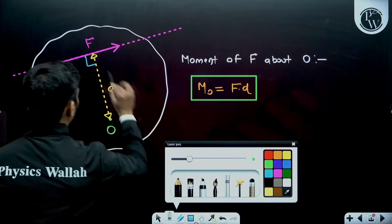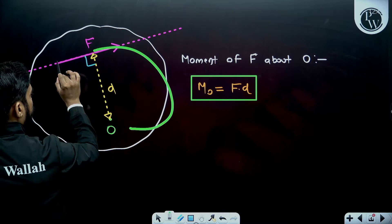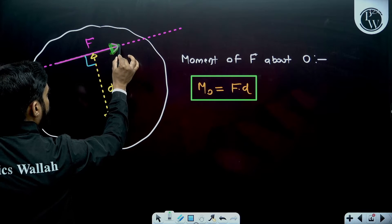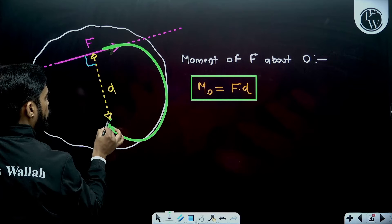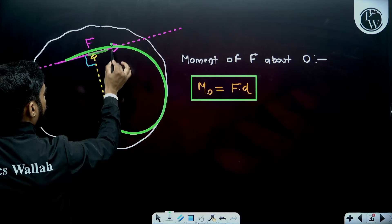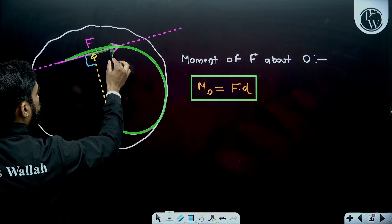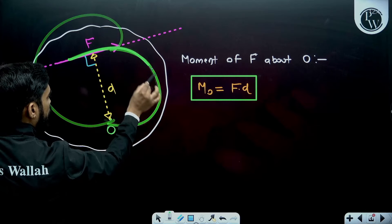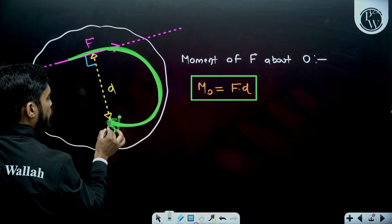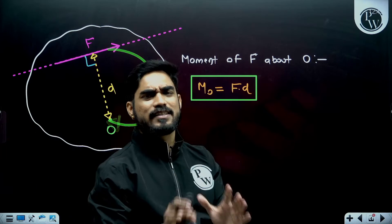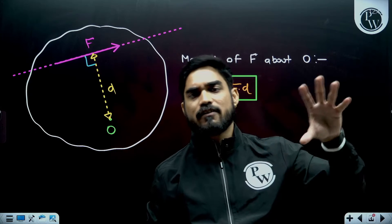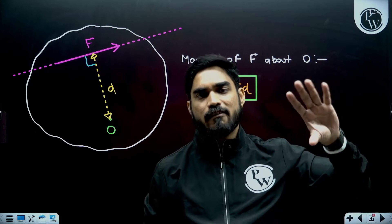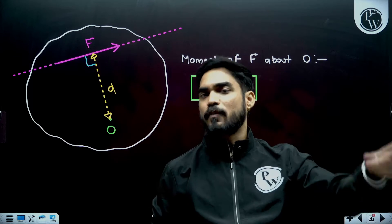Now this moment can be clockwise or anti-clockwise. If you find the direction — you can see this is the arrow — if you try to move this arrow towards point O using the shortest path, there are two ways. Which is the shortest path? If you move along this shortest path, then you get a clockwise moment. Now, which is positive and which is negative? There is no universal sign convention that clockwise is positive or anti-clockwise is positive. In different questions there are different sign conventions, so it will be mentioned in the question whether to take clockwise moment as positive or anti-clockwise moment as positive.